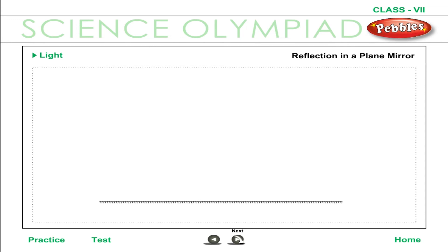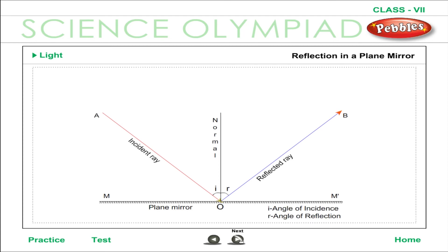Reflection in a plane mirror: a mirror with a plane surface is called a plane mirror; when light falls on it, regular reflection takes place. The ray AO falling on the mirror is the incident ray; the ray OB thrown back is the reflected ray. The point O where the incident ray strikes is the point of incidence. The ray perpendicular to the mirror at that point is the normal. The angle between the incident ray and the normal is the angle of incidence I, and the angle between the reflected ray and the normal is the angle of reflection R.